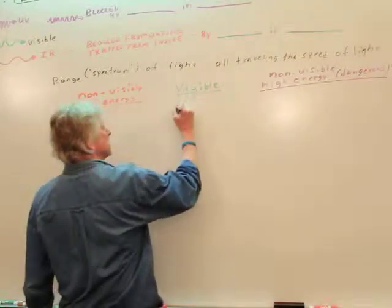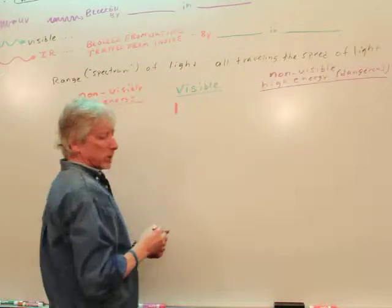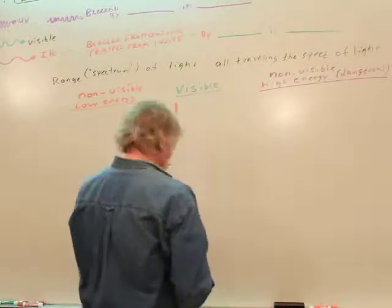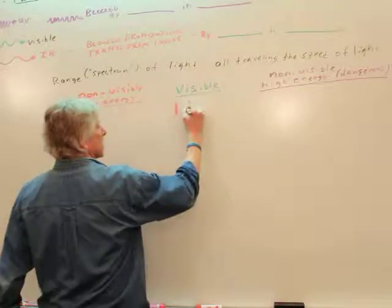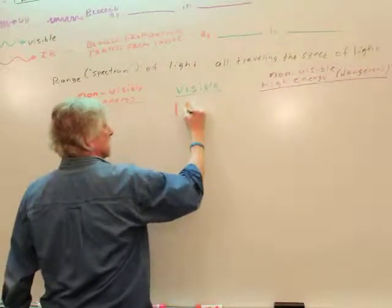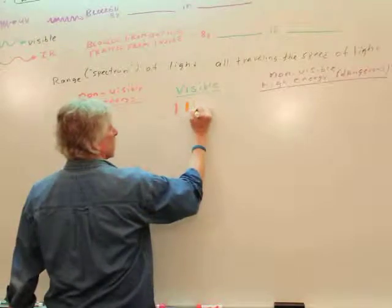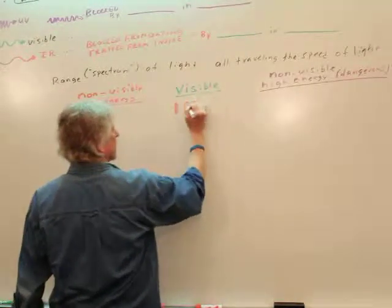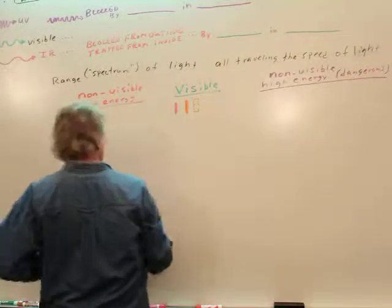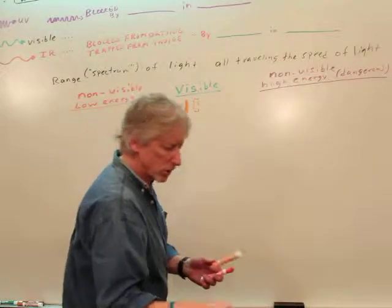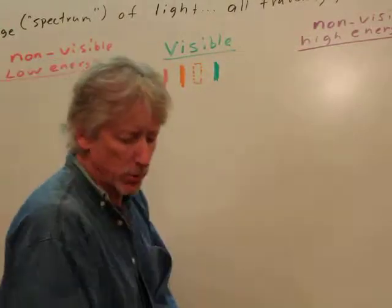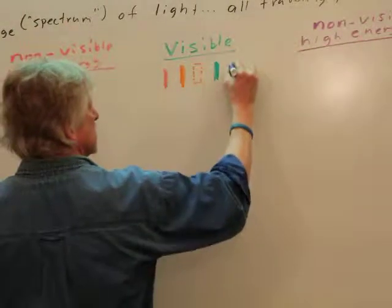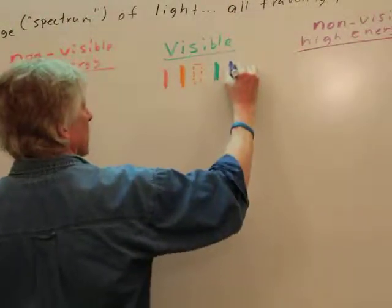I've got that one. And then I've got this color. Now I can't draw yellow on a white board, it doesn't really work. So that's my yellow, red, orange, yellow, green, blue, and violet.